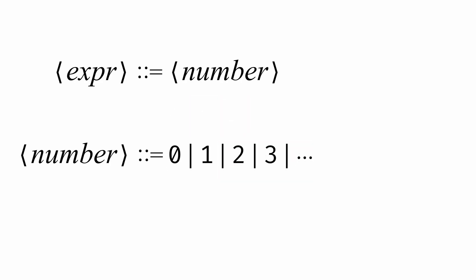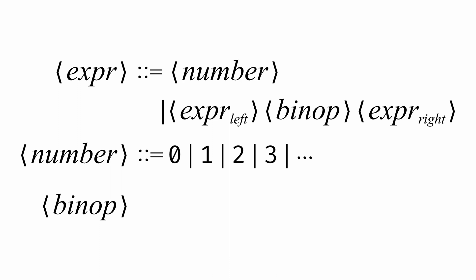To formalize that rule, we'll use a vertical bar to denote an alternate way of forming an expression. And in this case, an expression could be formed as another expression that we'll call expression left, a binary operator abbreviated binop, and another expression that we'll call expression right. We'll also need to define binop and say that the symbols for addition, subtraction, multiplication, and division are all valid binary operators. These rules taken together define what we call a grammar for how to build arithmetic expressions.